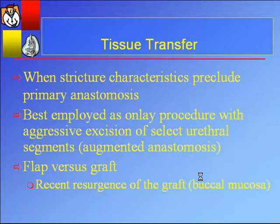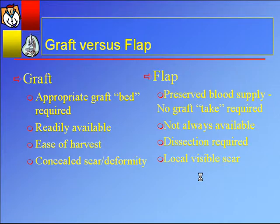The new concept over the last three years is augmented anastomosis: excise the worst, most obliterative segment — one to two centimeters — create a floor strip, and then onlay the remaining portion of the stricture. There's always the argument of flap versus graft. A graft is tissue taken, dismembered, and placed on a separate graft bed. A flap has its preserved blood supply, so no graft take is required. Grafts are readily available in most patients; flaps are not always available — for example, in someone with previous surgery or no penile skin redundancy. A graft is generally easy and quick to harvest; a flap requires significant dissection. A graft usually conceals scar, but a flap harvested from external areas usually leaves a visible scar.